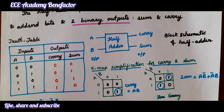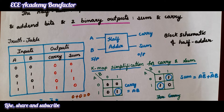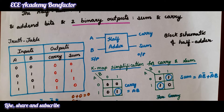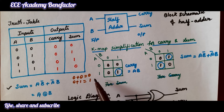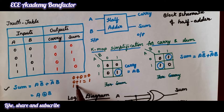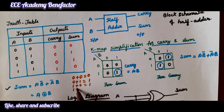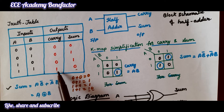Now, adding 0 plus 0: sum is 0 and carry is 0. Adding 0 plus 1: sum is 1 and carry is 0. Adding 1 plus 0: sum is 1 and carry is 0. Adding 1 plus 1: the result is 1,0 — that is, sum is 0 and carry is 1.